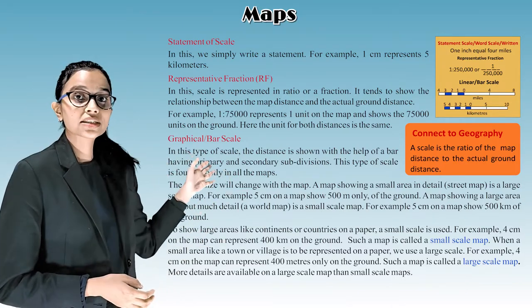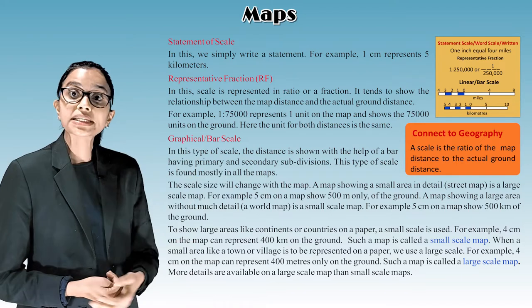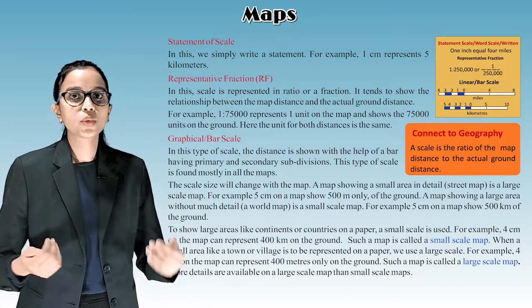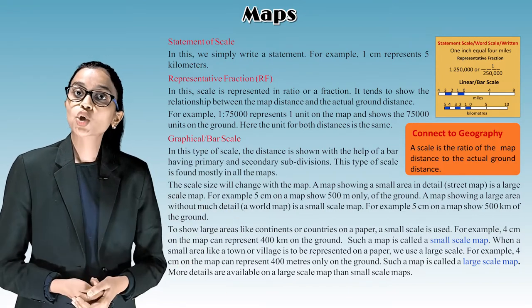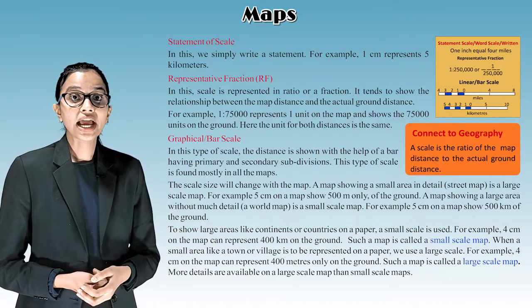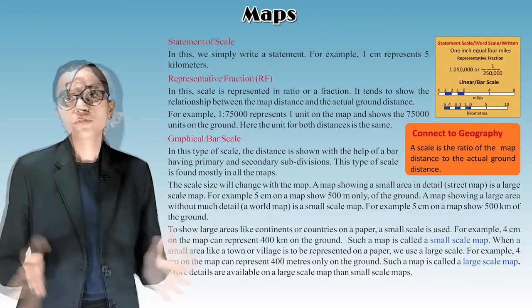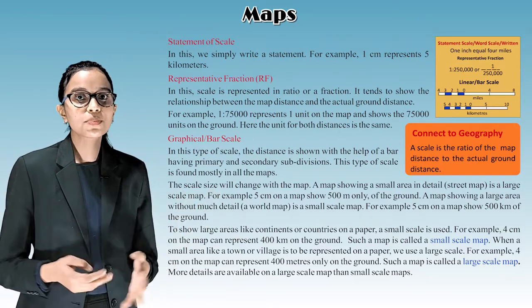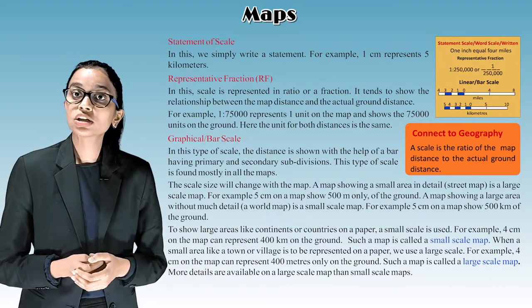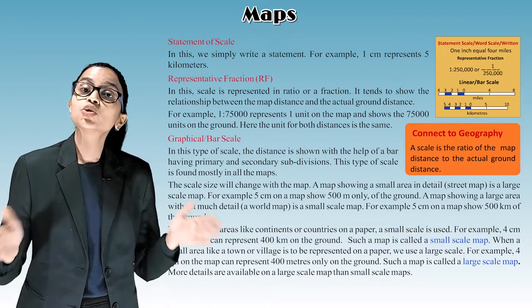To show large areas like continents or countries on a paper, a small scale is used. For example, 4 centimeters on the map can represent 400 kilometers on the ground. Such a map is called a large scale map. More details are available on a large scale map than small scale map.